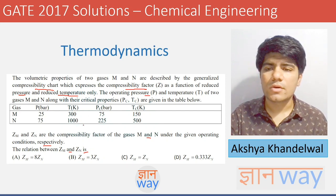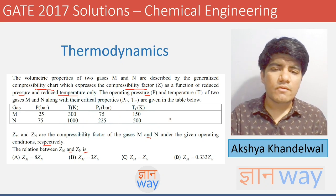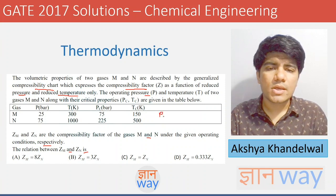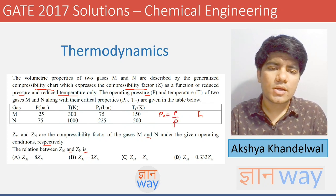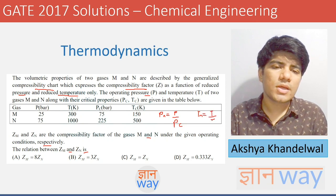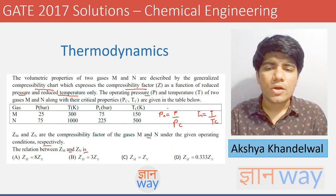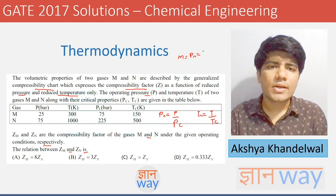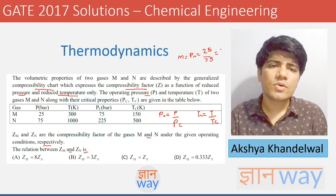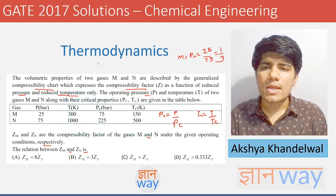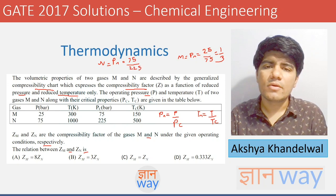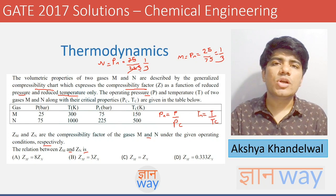This looks complex but it is a direct question. When we find the reduced pressure PR — formula: pressure upon critical pressure — for gas M it will be 25 upon 75, which equals 1/3. For gas N, the reduced pressure will be 75 upon 225, which is again 1/3. So the reduced pressure is the same for both gases.